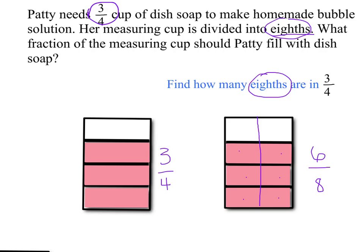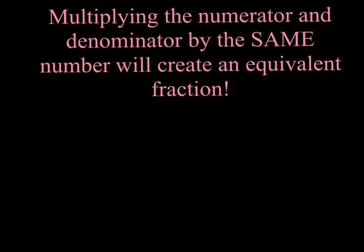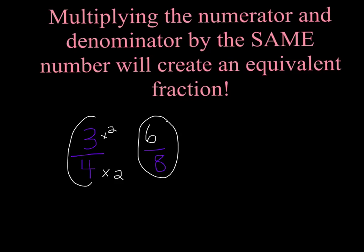Today we're going to talk about how you can use multiplication to find the answer instead of using a model. Multiplying the numerator and denominator by the same number will create an equivalent fraction. She had three-fourths and wants to convert it into eighths. I multiply the denominator by two: four times two is eight. Whatever you multiply the denominator by, you must also multiply the numerator by, to keep it balanced. Three times two is six and four times two is eight — so six-eighths equals three-fourths. They're equivalent; they mean the same amount.